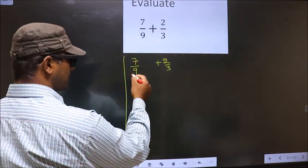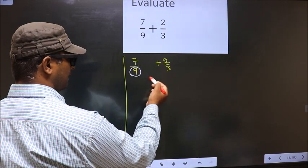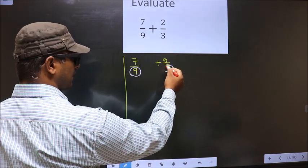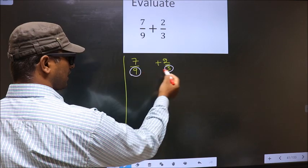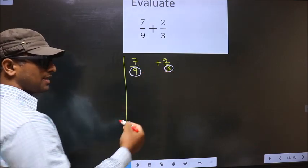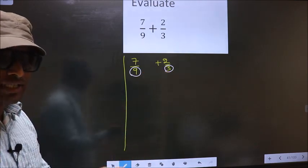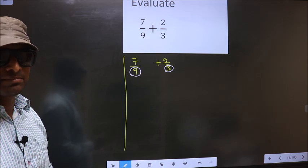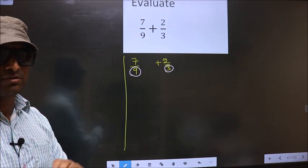In this fraction the denominator is 9. Here the denominator is 3. The denominators are not same. Whenever the denominators are not same we should take the LCM of them.